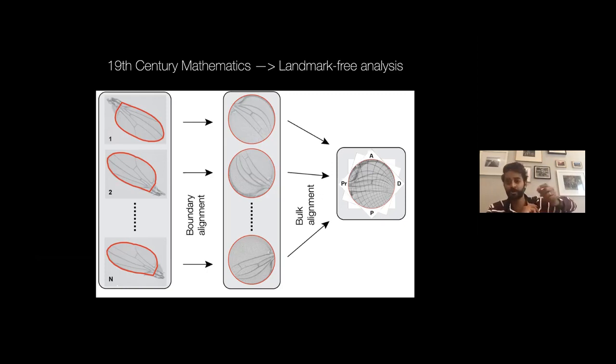I'm going to come up with a very different way of doing phenotyping, which is not landmark-based. I'm not going to go into the details of the mathematics—we have a paper now on bioRxiv. The idea is you use 19th century mathematics, complex analysis, which allows you to do bulk and boundary alignment precision without using landmarks.